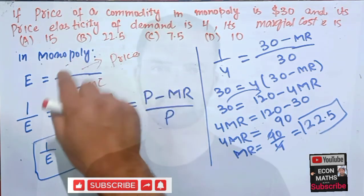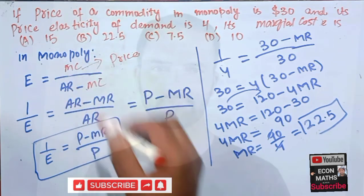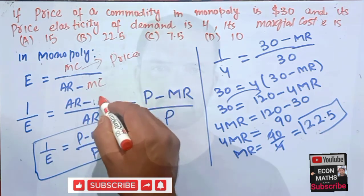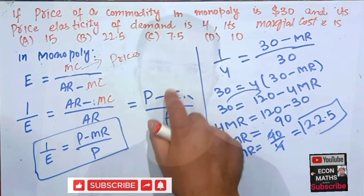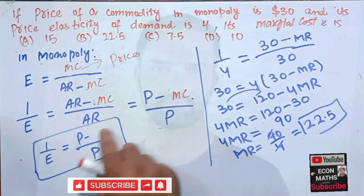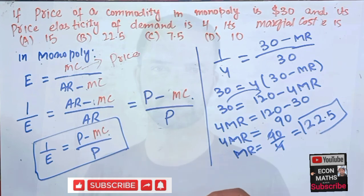Everywhere we have MR we can write it MC here. So the relation will look like this and we can calculate the marginal cost from this equation also. If the question asks us to find the marginal cost then this equation will hold.